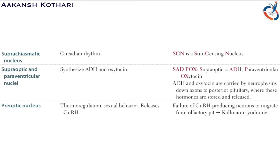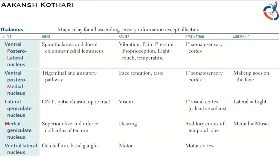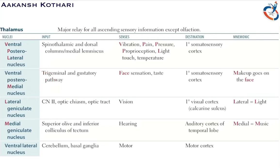Kallmann syndrome occurs when there is failure of GnRH-producing neurons to migrate from the olfactory pit. That covers hypothalamus. Now for thalamus: there are five major nuclei — the ventral posterior lateral nucleus (VPL), ventral posterior medial nucleus (VPM), lateral geniculate nucleus, medial geniculate nucleus, and ventral lateral nucleus.